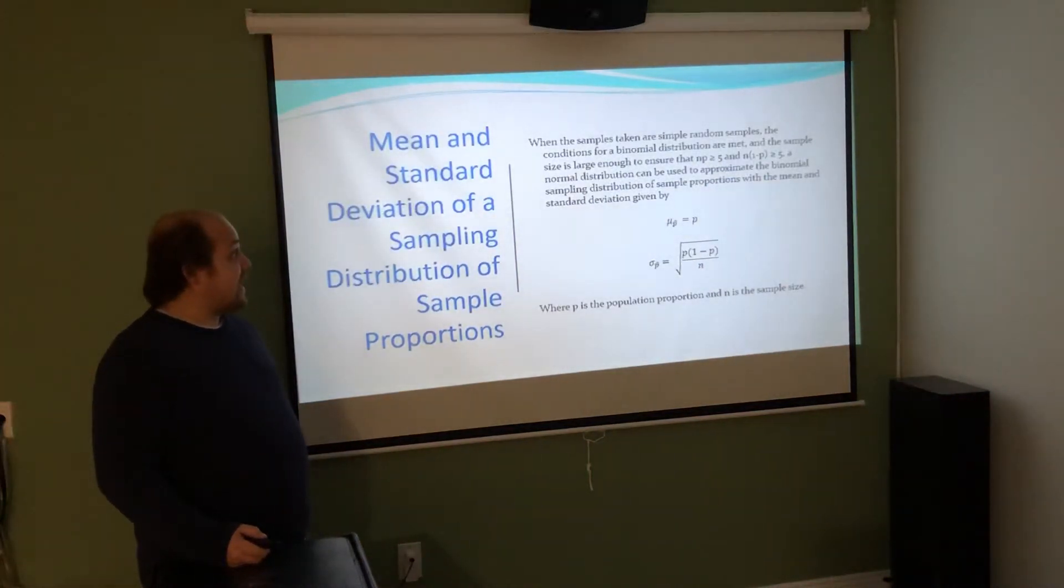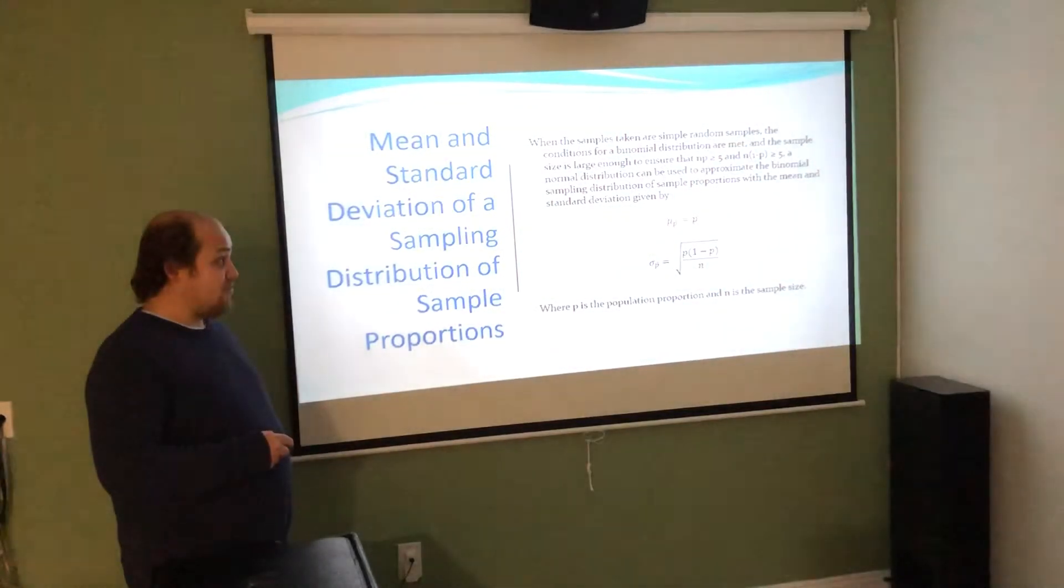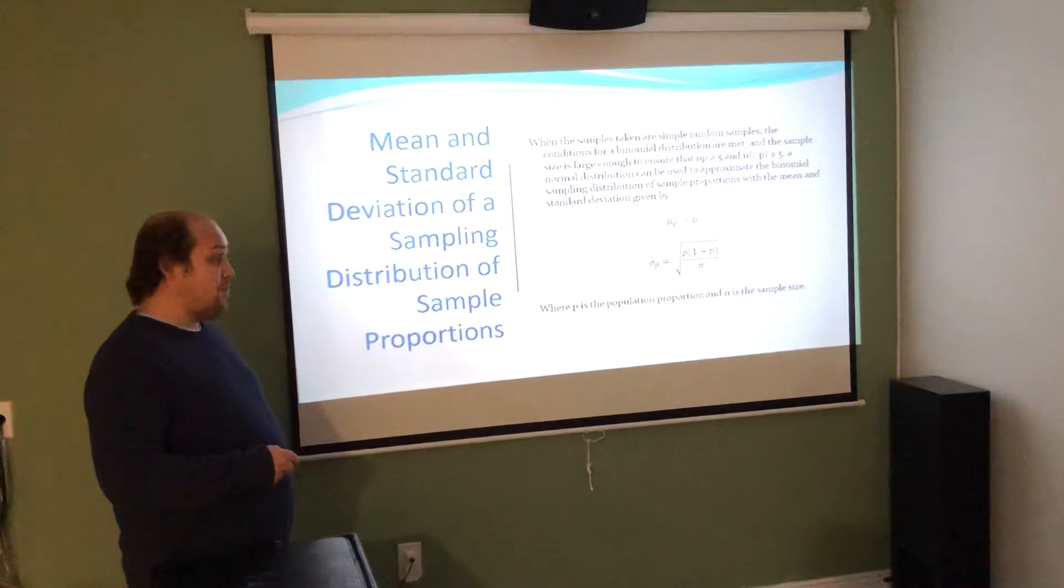When the samples are simple random samples, the conditions for a binomial distribution are met, and the sample size is large enough to ensure that NP is greater than 5 and N times 1 minus p is greater than 5, a normal distribution can be used to approximate the binomial. The mean of this normal distribution is just p, the standard deviation is the square root of p times 1 minus p over N.